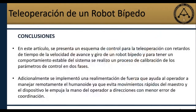En cuanto a las conclusiones: en este trabajo se propuso un esquema de control para la teleoperación bilateral de la velocidad de avance y giro con retardos de tiempo. Para obtener un comportamiento estable del sistema, se realizó un proceso de calibración de los parámetros de control en dos fases. Adicionalmente se implementó una realimentación de fuerza que ayuda al operador a manejar remotamente, evita movimientos rápidos del maestro y dirige la mano del operador hacia direcciones con menor error de coordinación.